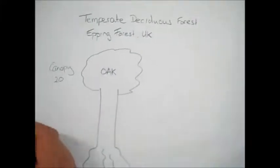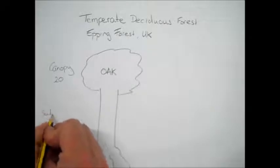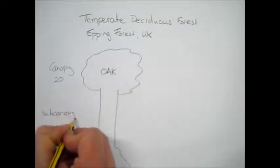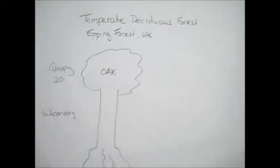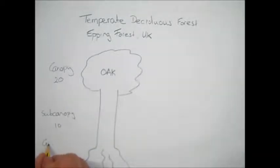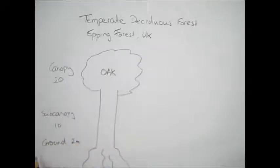We also have the sub-canopy, where smaller trees like hazel and rose trees grow — about 10 meters high. Then we have the ground layer at about two meters, with herbs right on the very surface of the ground.